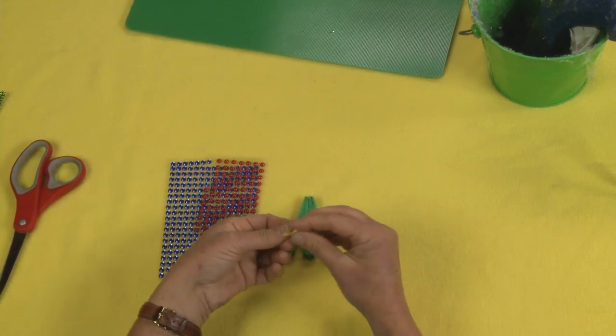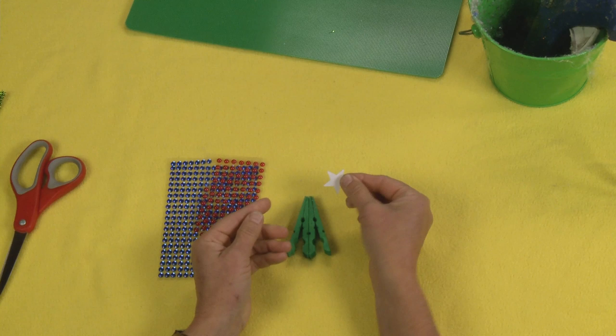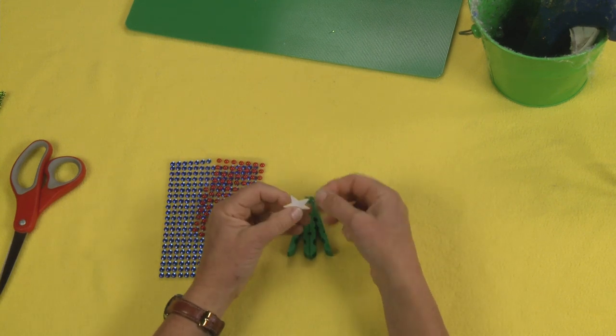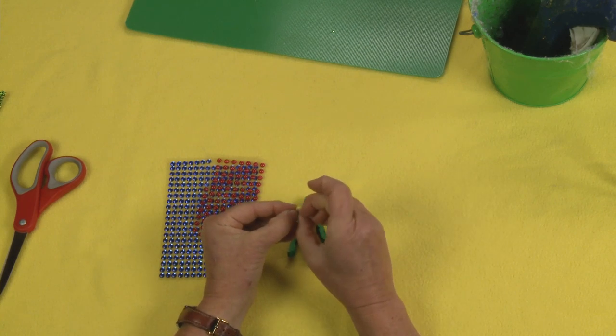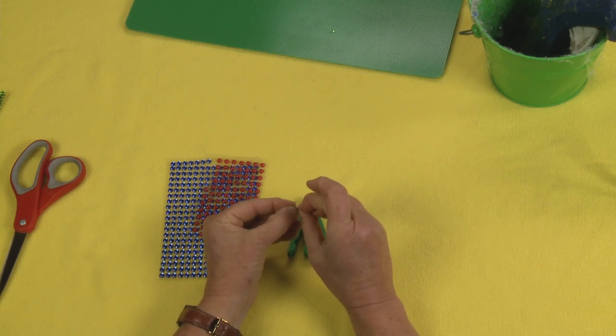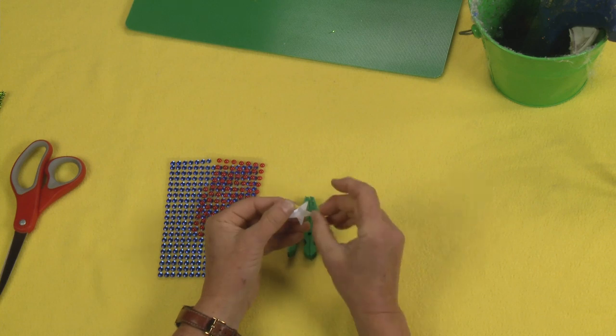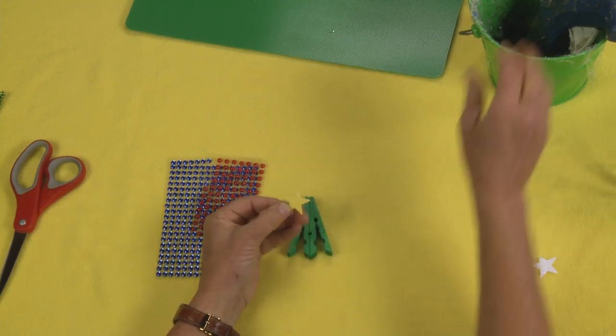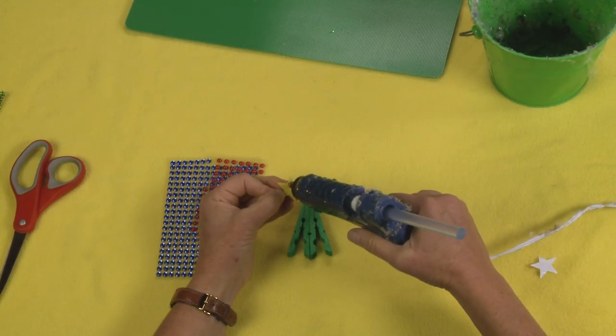So of course we've got to put a star on the top of our tree. Now what I'm going to actually do is I am not going to use the sticker part as a sticker. I'm actually going to add hot glue to it. I'm just going to take a little hot glue just to make sure that it stays.